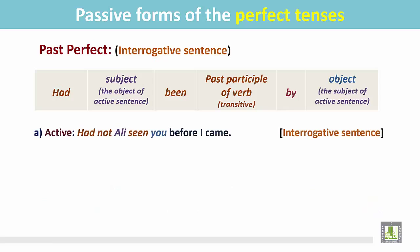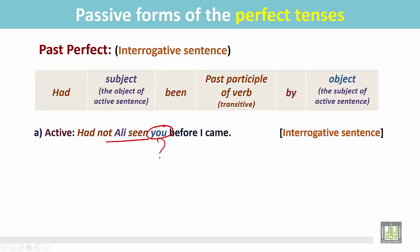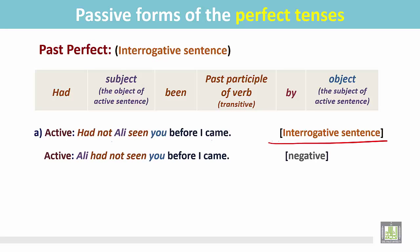Another example: this is an interrogative sentence but in the negative — 'Had not Ali seen you before I came?' Ali seen whom? We find the answer 'you', and it is the object for the verb 'seen'. There is no object for the other verb. Change this interrogative sentence into a statement: 'Ali had not seen you before I came.'